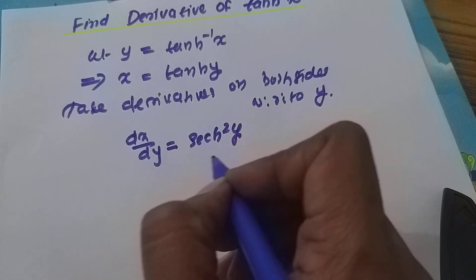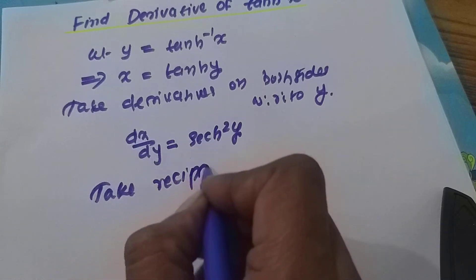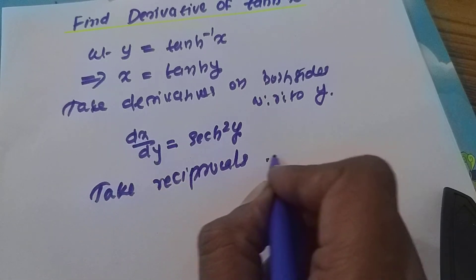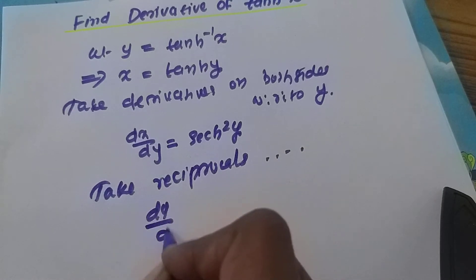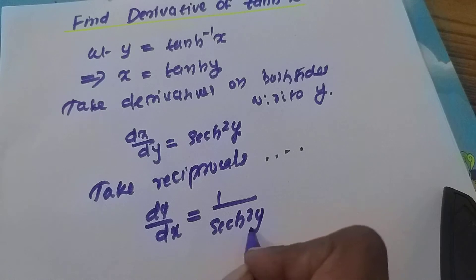Next, take reciprocals on both sides. So dy/dx equals 1 over sech squared y.